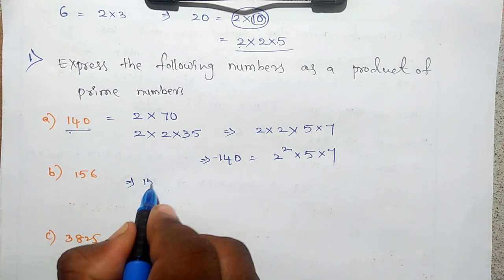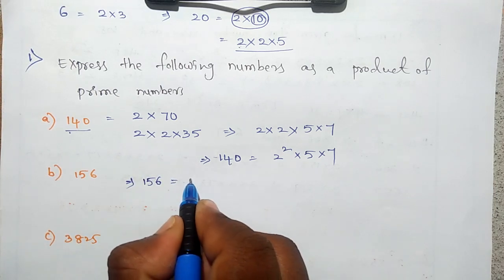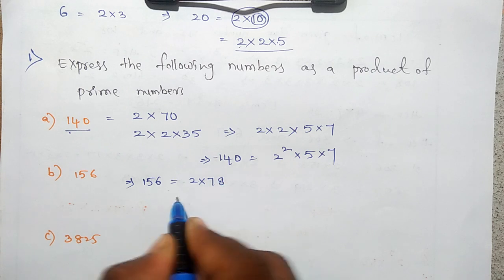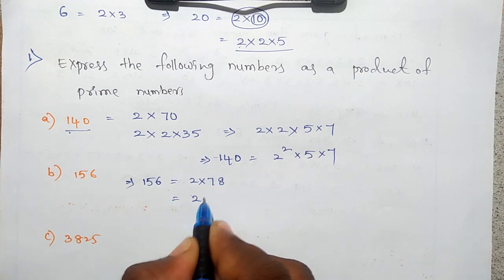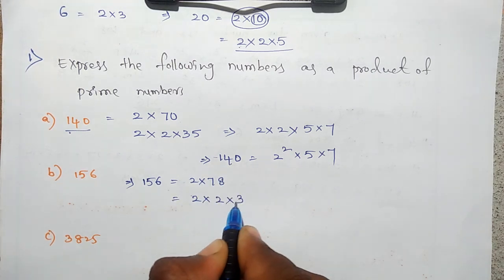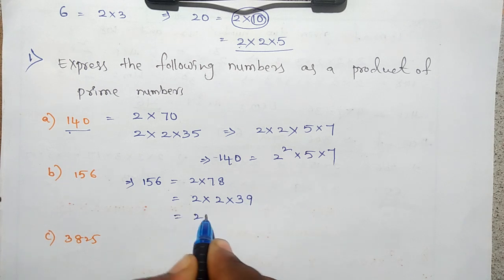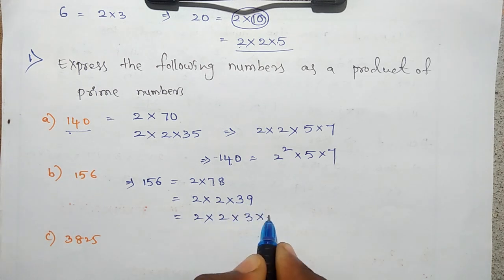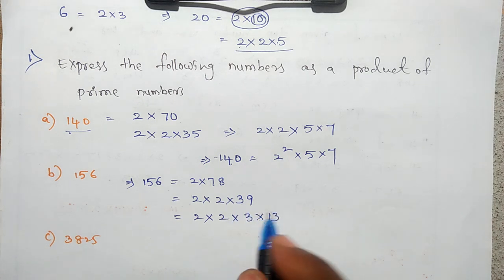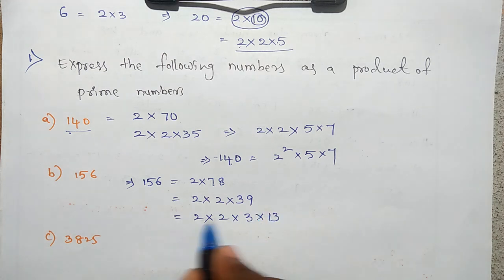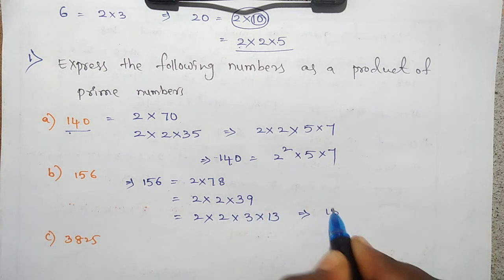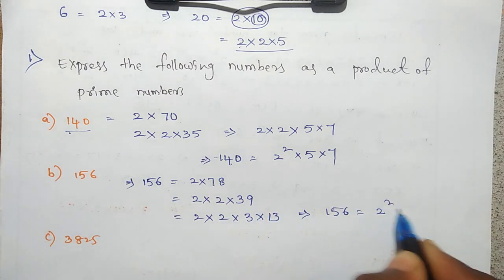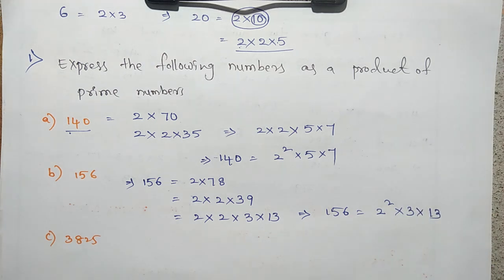156 is equal to 2 into 78, and 78 is equal to 2 into 39, and 39 is equal to 3 into 13. Because 39 is an odd number, we cannot divide it by 2. So 156 is equal to 2 squared into 3 into 13.